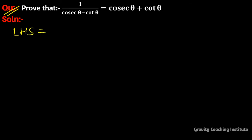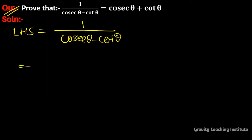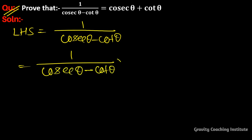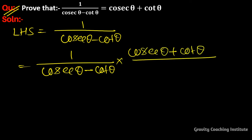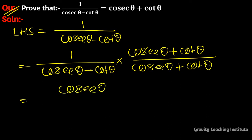Here, LHS is equal to 1/(cosec θ - cot θ). Now, rationalizing the denominator, we multiply by (cosec θ + cot θ)/(cosec θ + cot θ), giving us cosec θ + cot θ in the numerator.